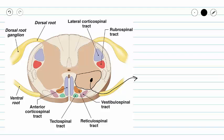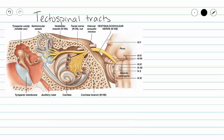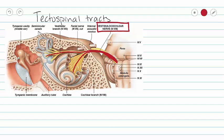We are going to be looking at our tectospinal, reticulospinal, and vestibulospinal tracts. You may wonder why you're looking at an ear in this picture. I wanted to show you that information coming in over our vestibulocochlear nerve, which is cranial nerve eight, is going to come in and we're going to incorporate some hearing information and some balance information. That information comes in to the area of our pons and medulla oblongata, and is then carried to our tectum.